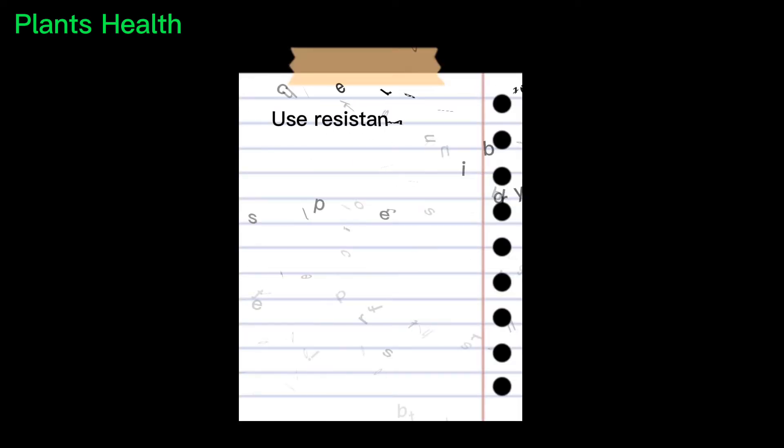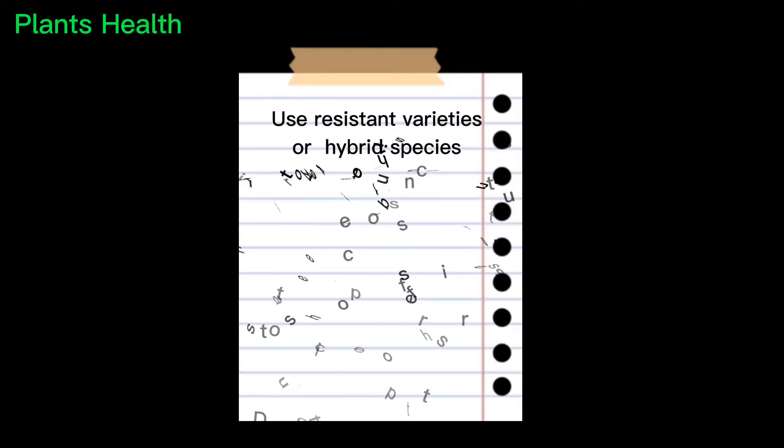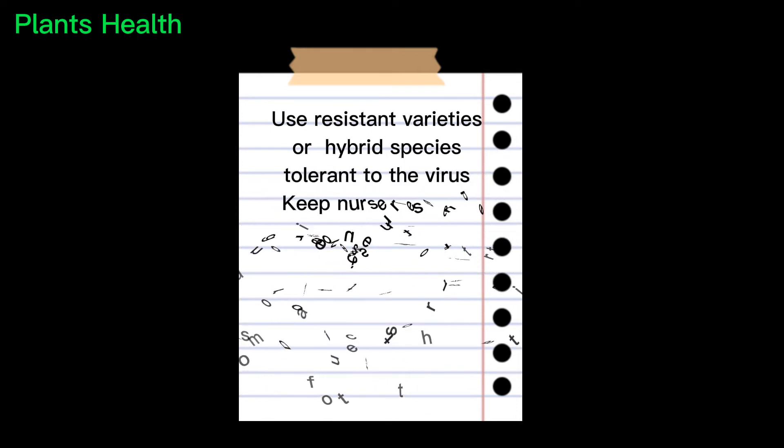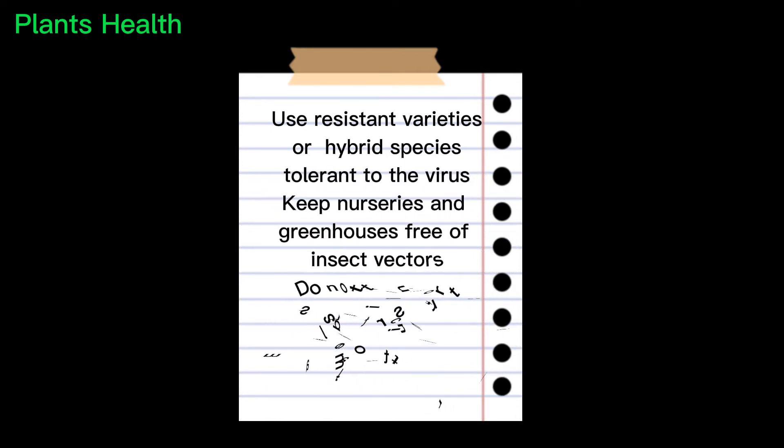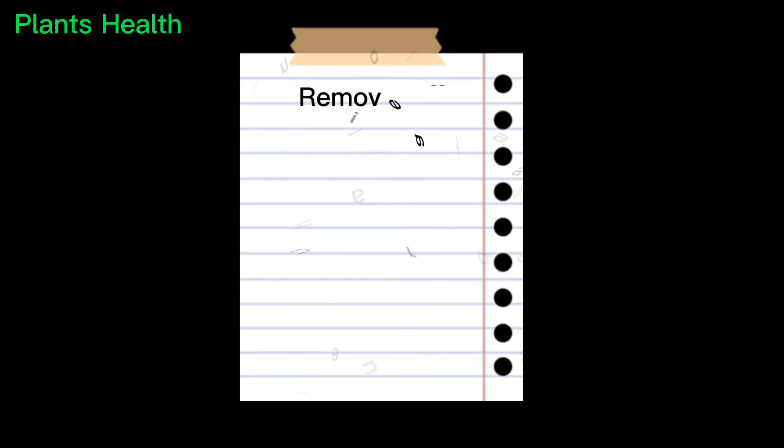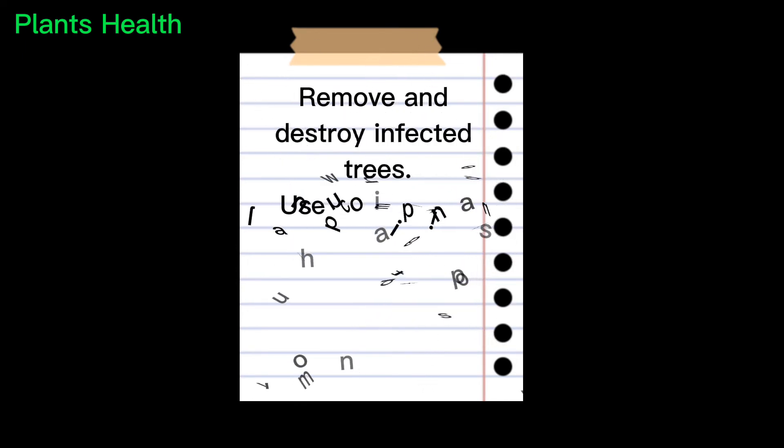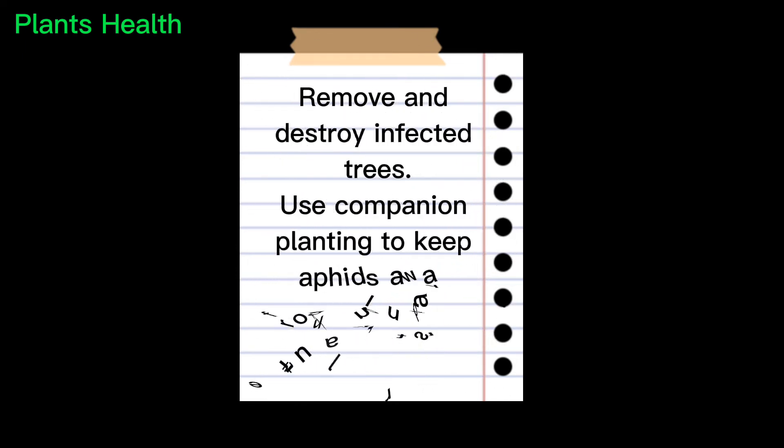Use resistant varieties or hybrid species tolerant to the virus. Keep nurseries and greenhouses free of insect vectors. Do not transport suspicious citrus material to other farms. Remove and destroy infected trees. Use companion planting to keep aphids away from your plants.